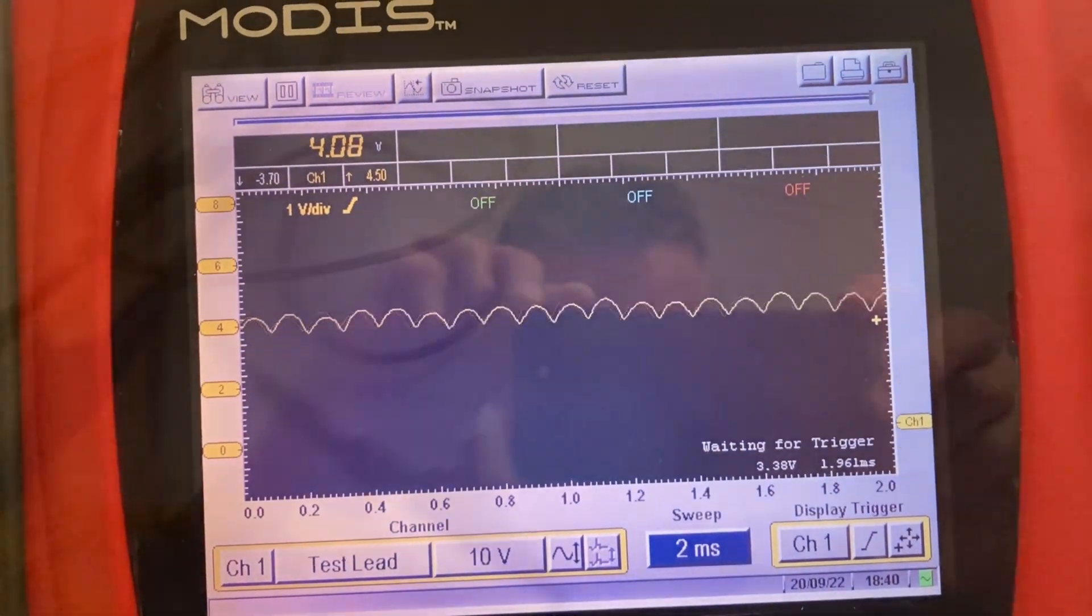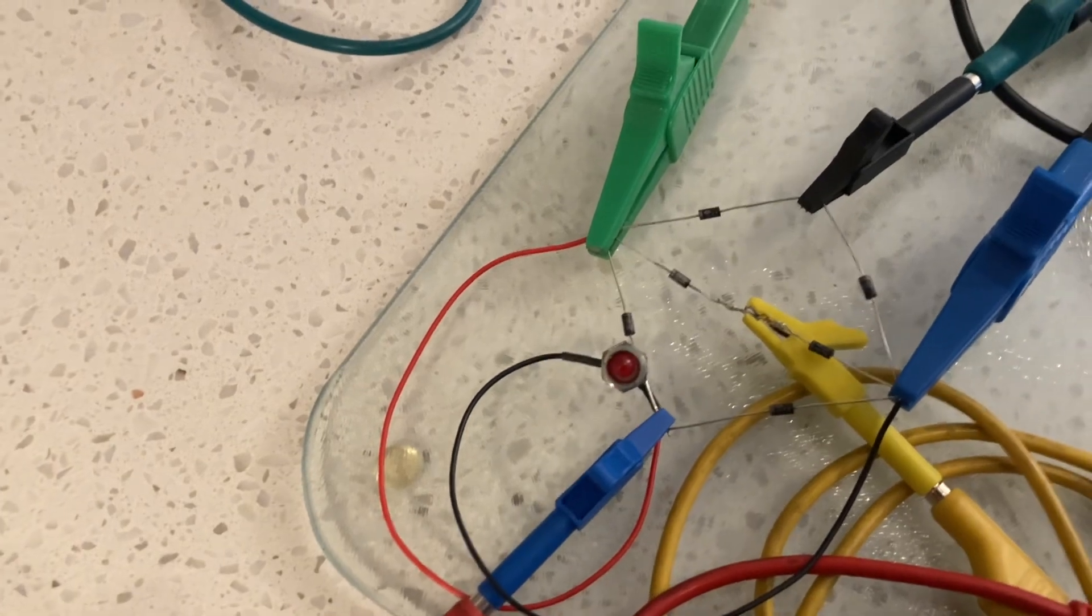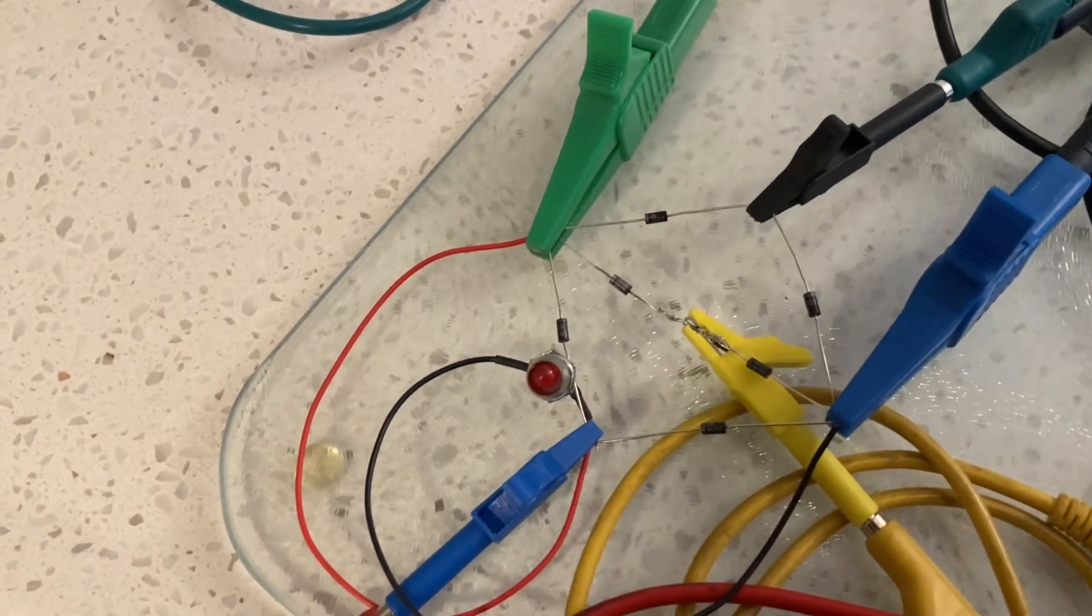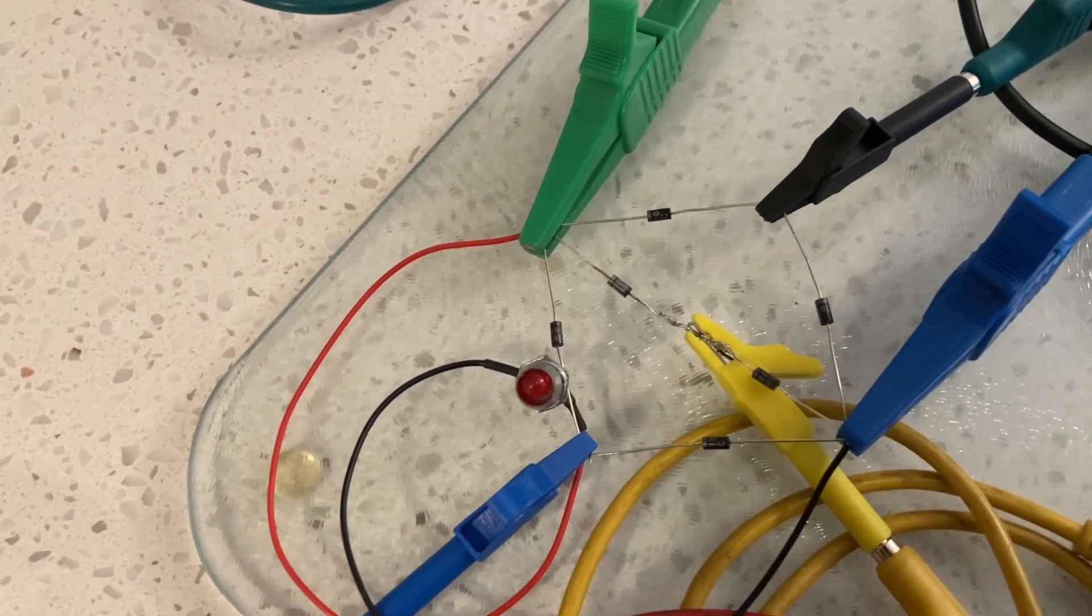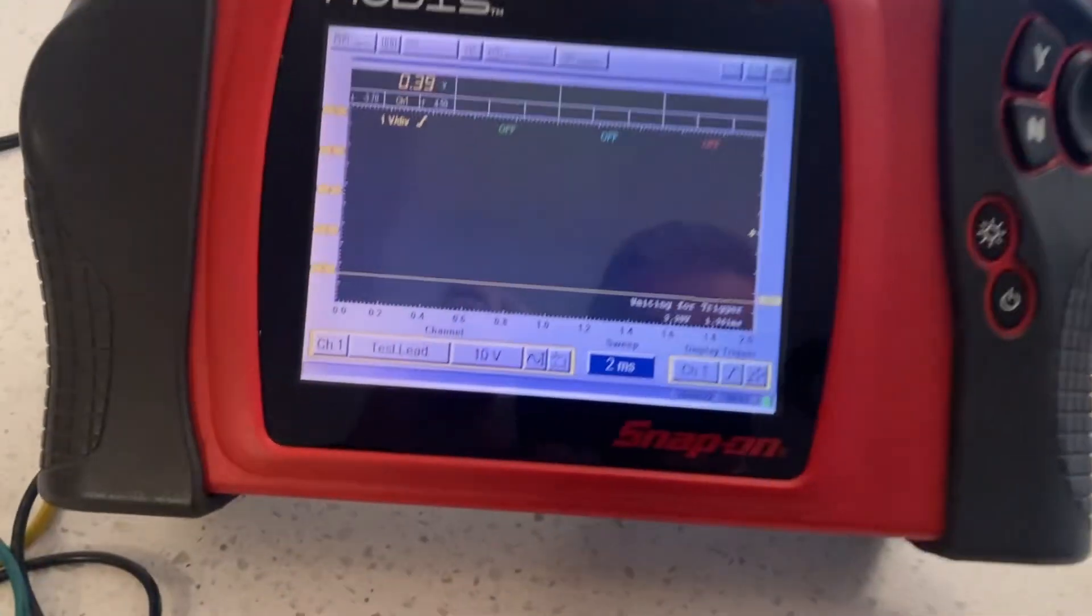So I have my pliers here. What I'm going to do is I'm going to clip the leads to one of the diodes. I don't suppose it'll matter which one I do, or perhaps it will with respect to the positive and negative. Well sure, let's find out. Let's start her up again.